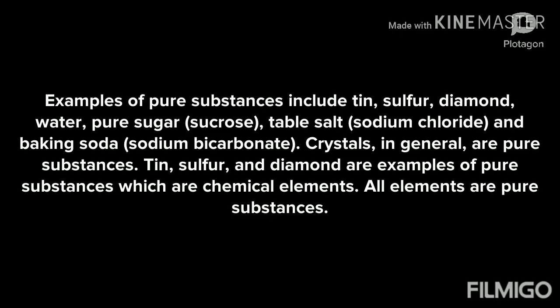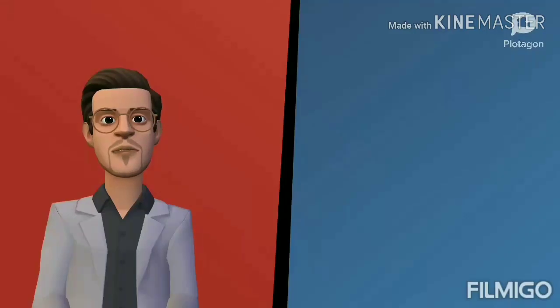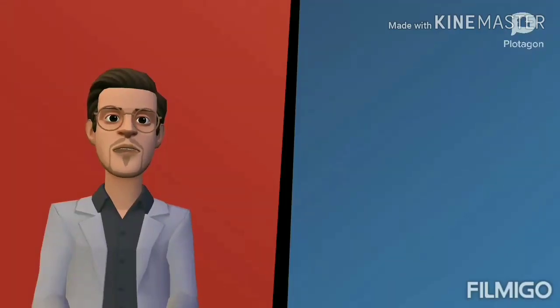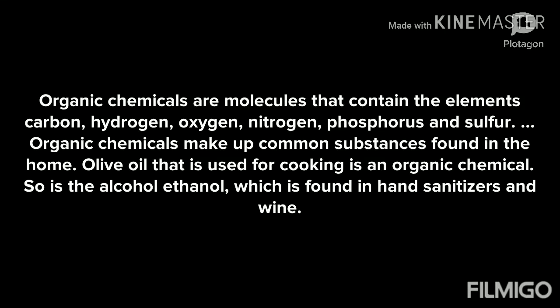All elements are pure substances. Types of substances: pure substances are those that are free from any kind of mixture and contain only one kind of particle. Examples of pure substances include iron, aluminum, silver, and gold. Mixtures are substances that have two or more different particles.